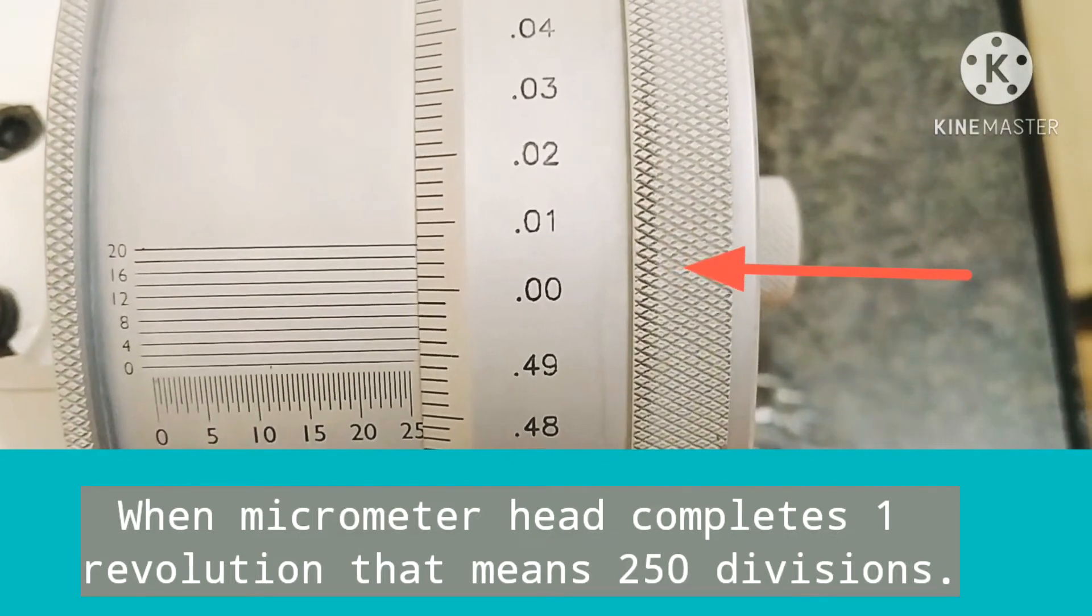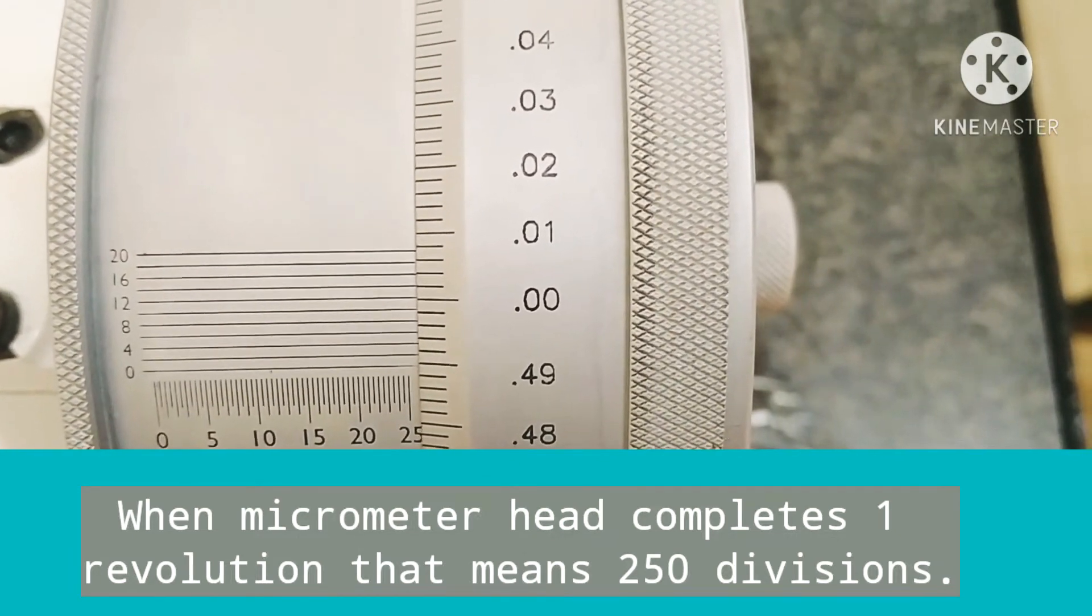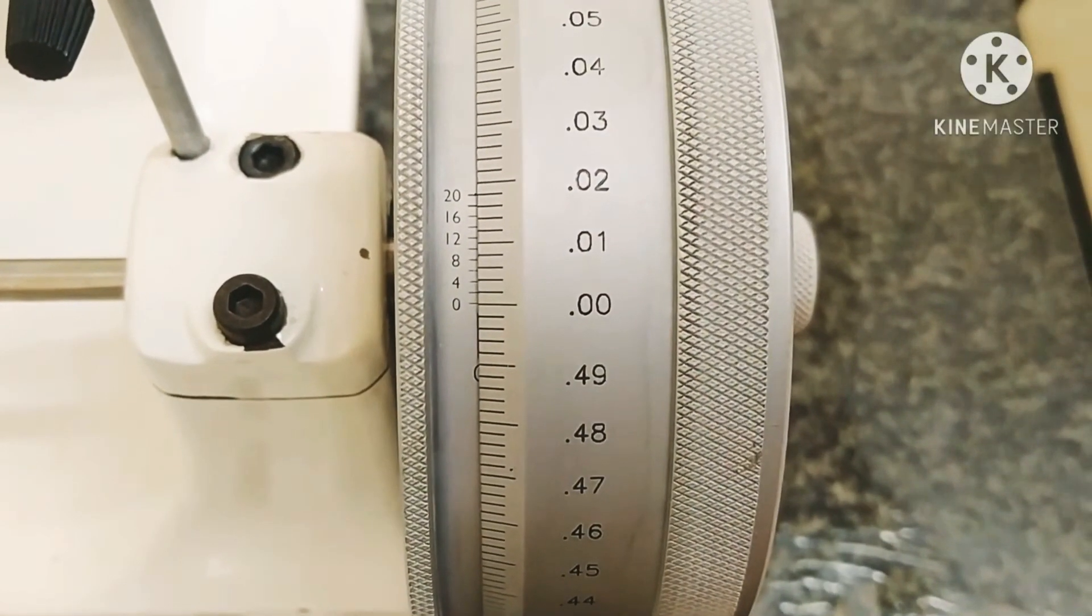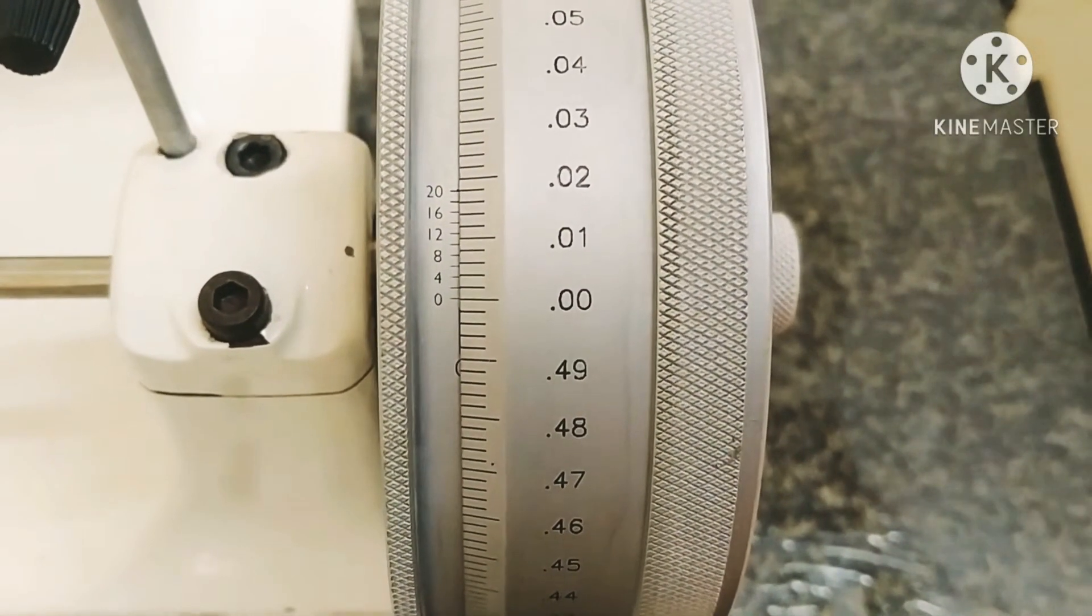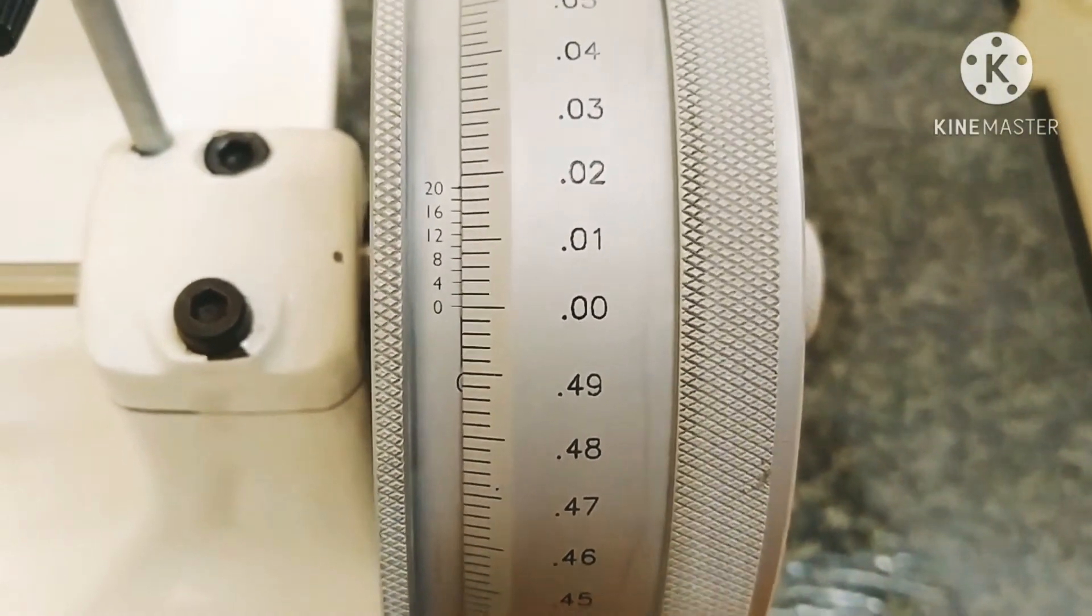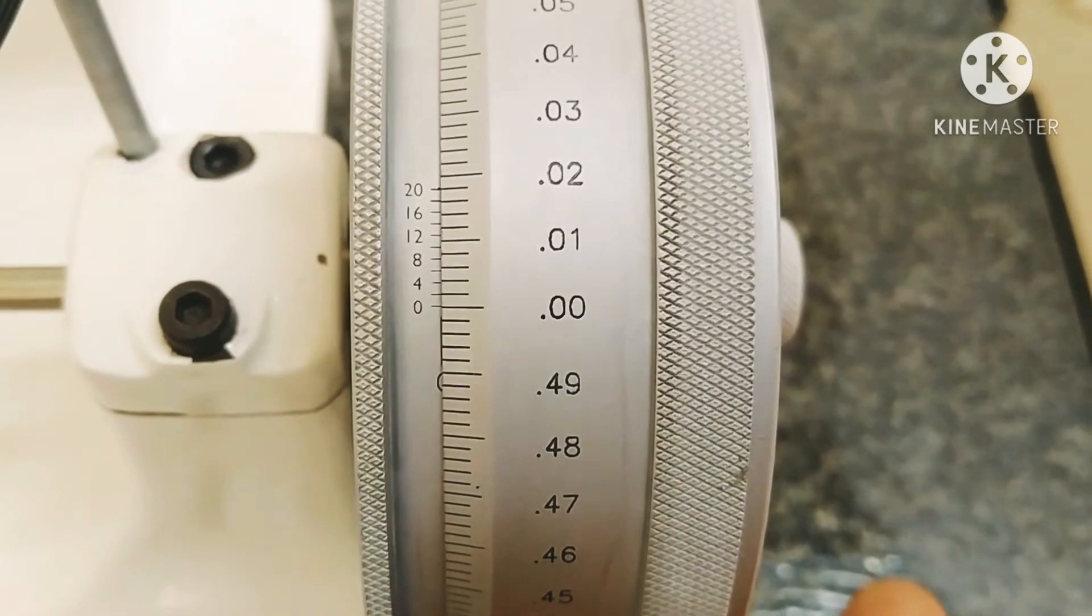On the micrometer head there are total 250 divisions. When the micrometer head rotates through one complete revolution, the main scale shows 0.50 mm.